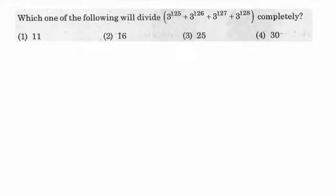We take 3 power 125 common from all the terms. So the number becomes 3 power 125 times something.